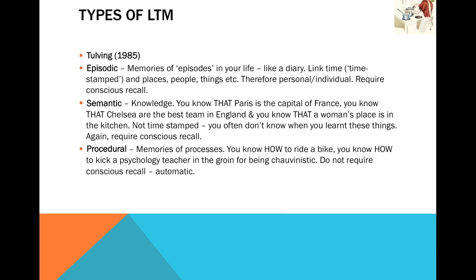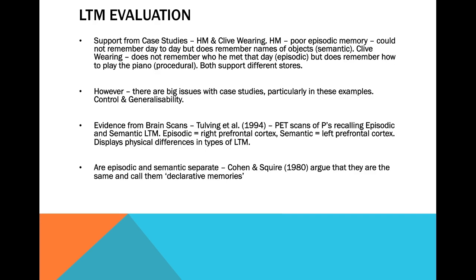So those are the different types of long-term memory according to Tulving. We need to ask ourselves: is this a good explanation? Do these different types actually exist? We'll look at some evaluation. Case studies are really handy here — as you'll know from research methods, they let us look at things that would be really difficult to study otherwise. The case studies we're looking at involve people who have had brain damage, and they can help us understand memory further. I mentioned HM before, and we're also going to look at Clive Wearing.